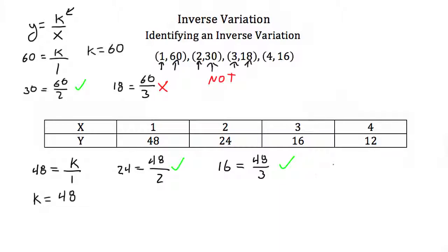Finally, testing (4,12): 12 equals 48 over 4. Since 48 divided by 4 equals 12, yes, the numbers in this table do represent an inverse variation.